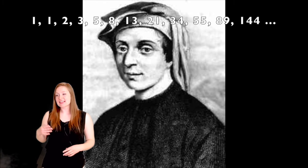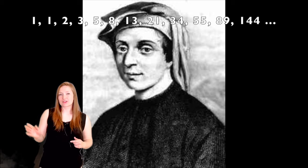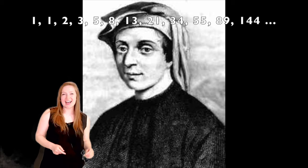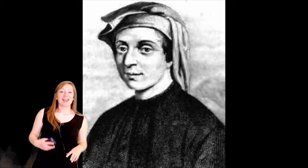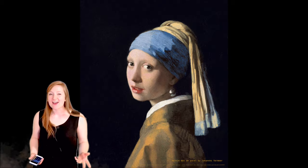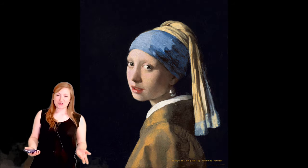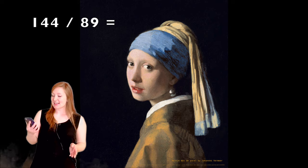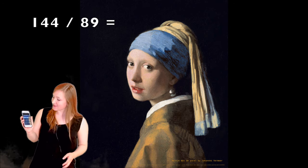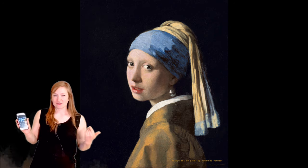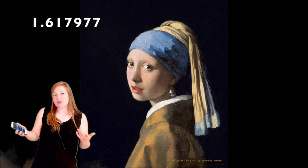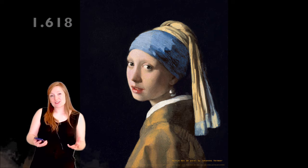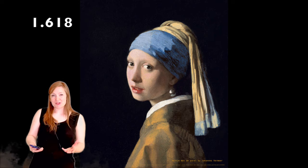And that's our sequence that goes on and on, following the numbers 8, 13, 21, 34, 55, 89, 144, and so on. The further down the sequence goes, if we take 144 and divide it by 89, we get 1.6179, or approximately 1.618 — that's our magic number, our golden ratio.